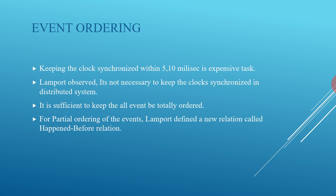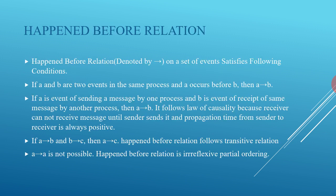For partial ordering of events, Lamport defined a new relation called the happened-before relation, denoted by a forward arrow. On a set of events, it satisfies the following conditions: if A and B are two events in the same process and A occurs before B, then A happened before B. If A is the event of sending a message by one process and B is the event of the receipt of that same message by another process, then A happened before B.